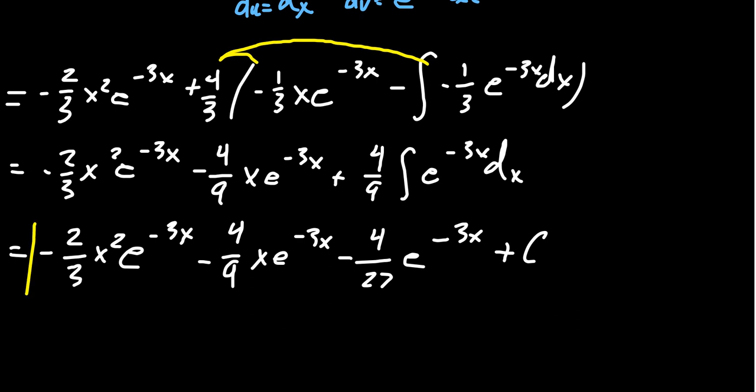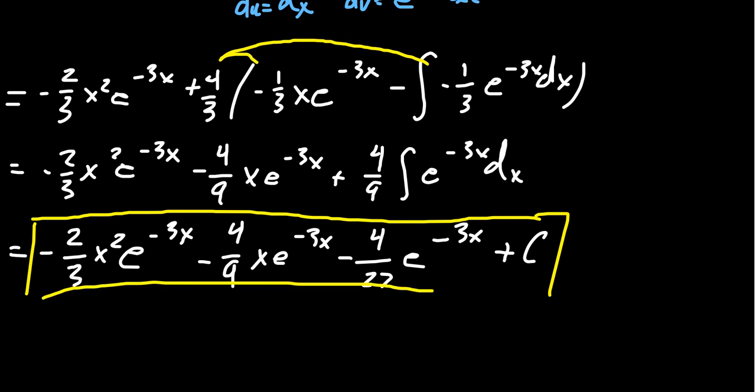Integration by parts is a technique we do by parts. Imagine you have a 6-foot sub sandwich to eat — no one eats it all in one bite; you take small bites, one after another. Some integrals can be done in 2 bites, some like this one in 3 bites, and more complicated ones in many more. This process can be iterated — doing it over and over again until all the powers of x are exhausted — and eventually the power of x will disappear.